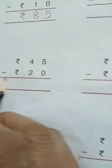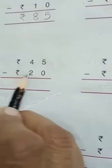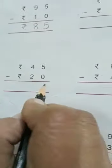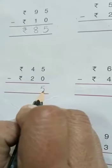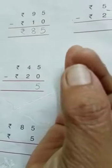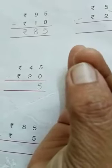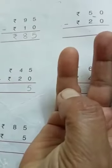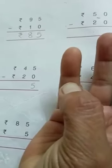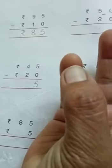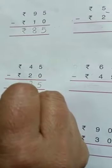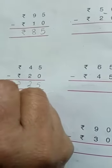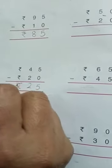Now rupees 45 minus rupees 20. 5 minus 0 is 5. And 4 minus 2: count 1, 2, 3, 4, take away 2: 1, 2. How many numbers are left? 1, 2. Answer is rupees 25.